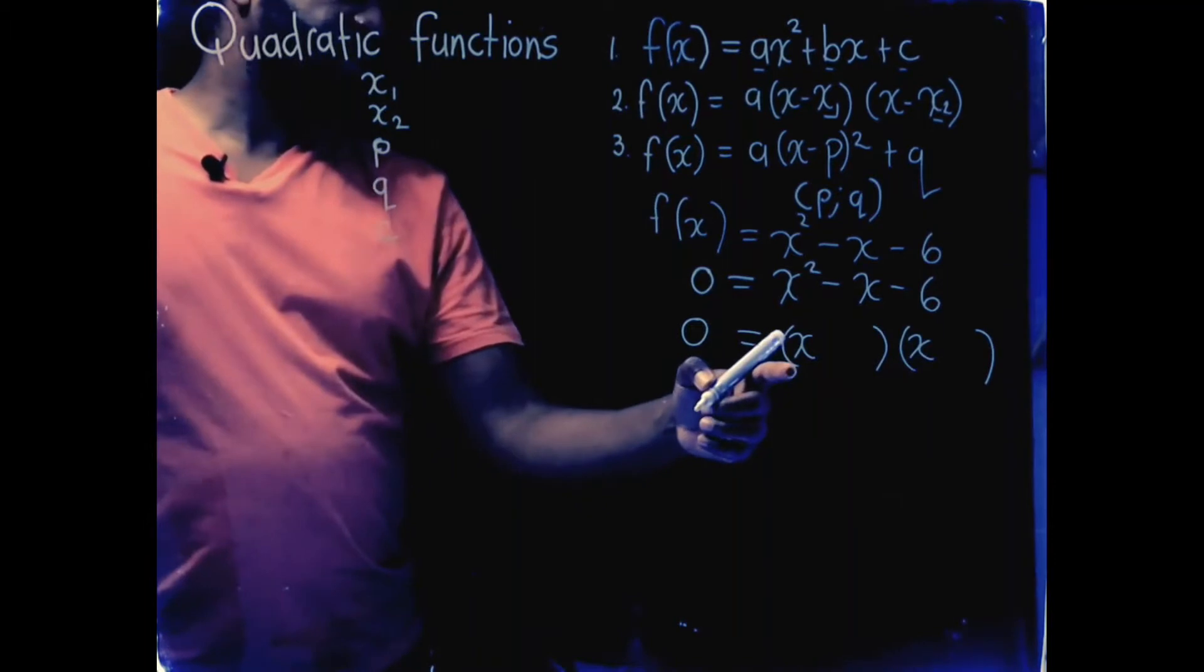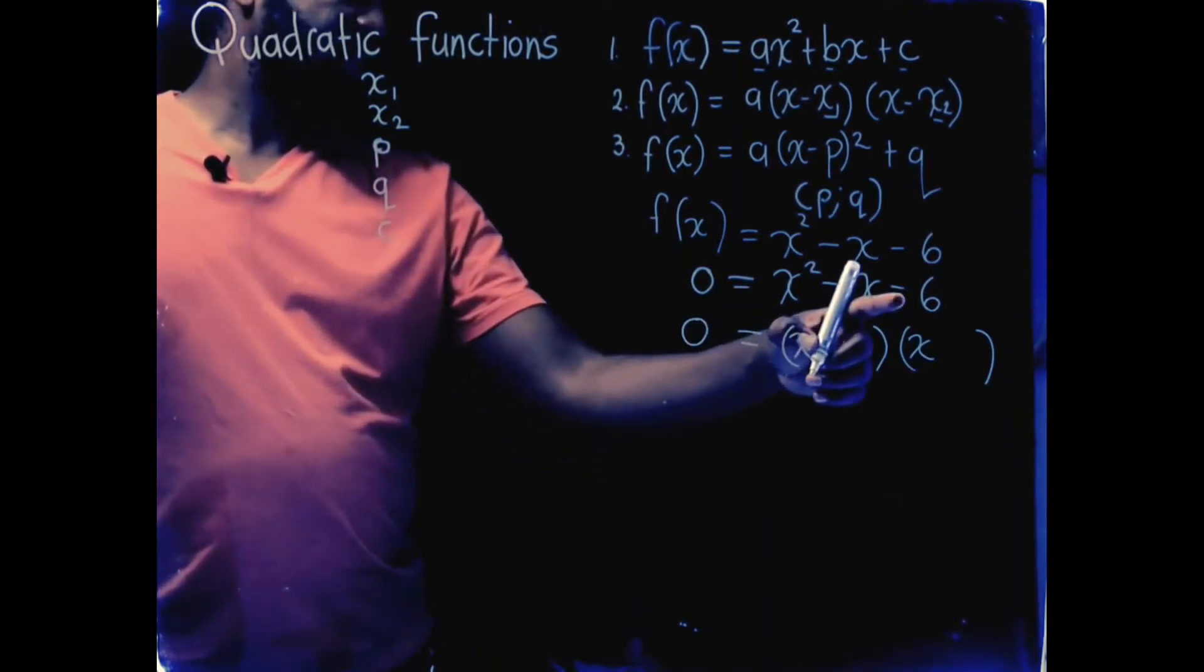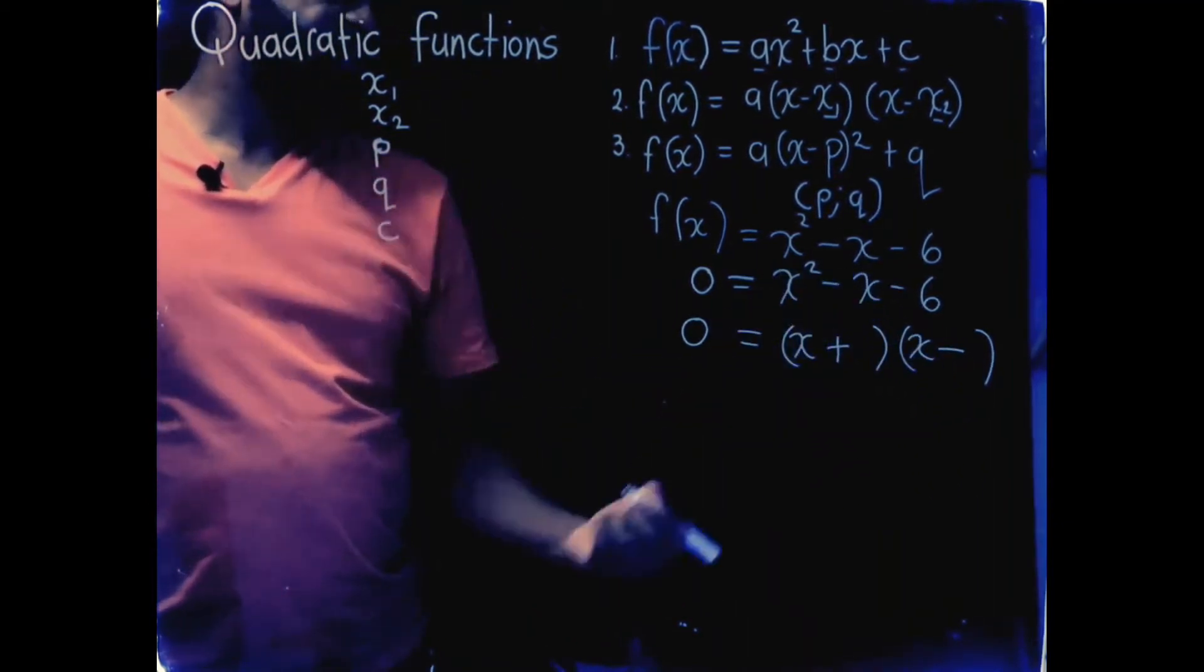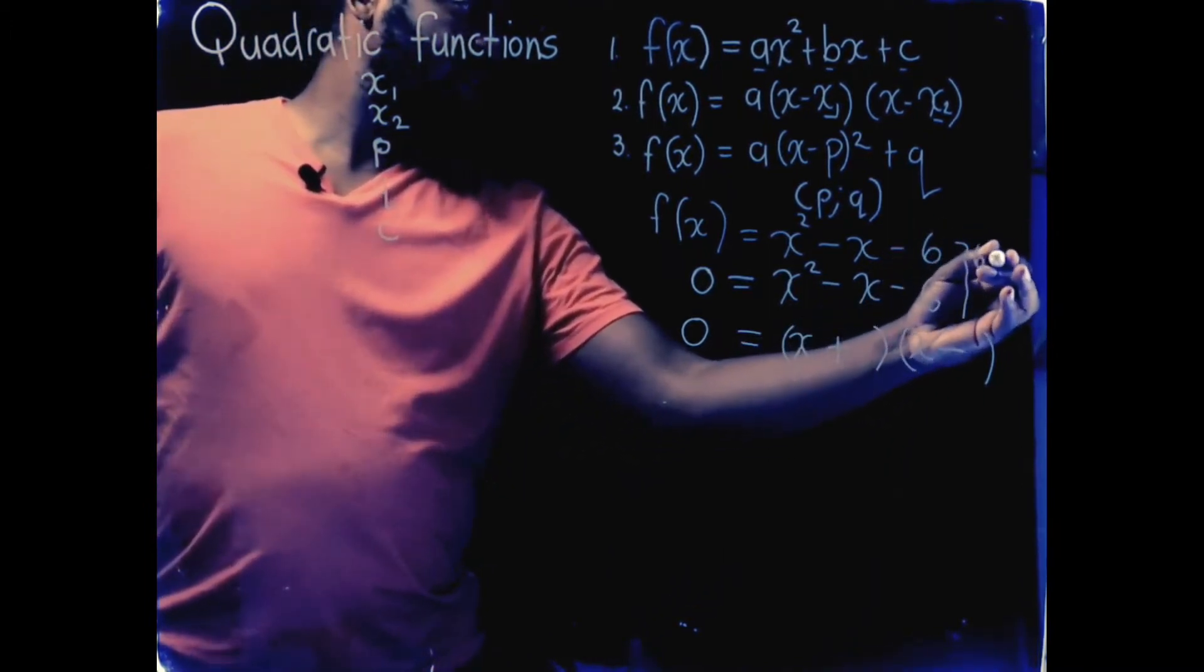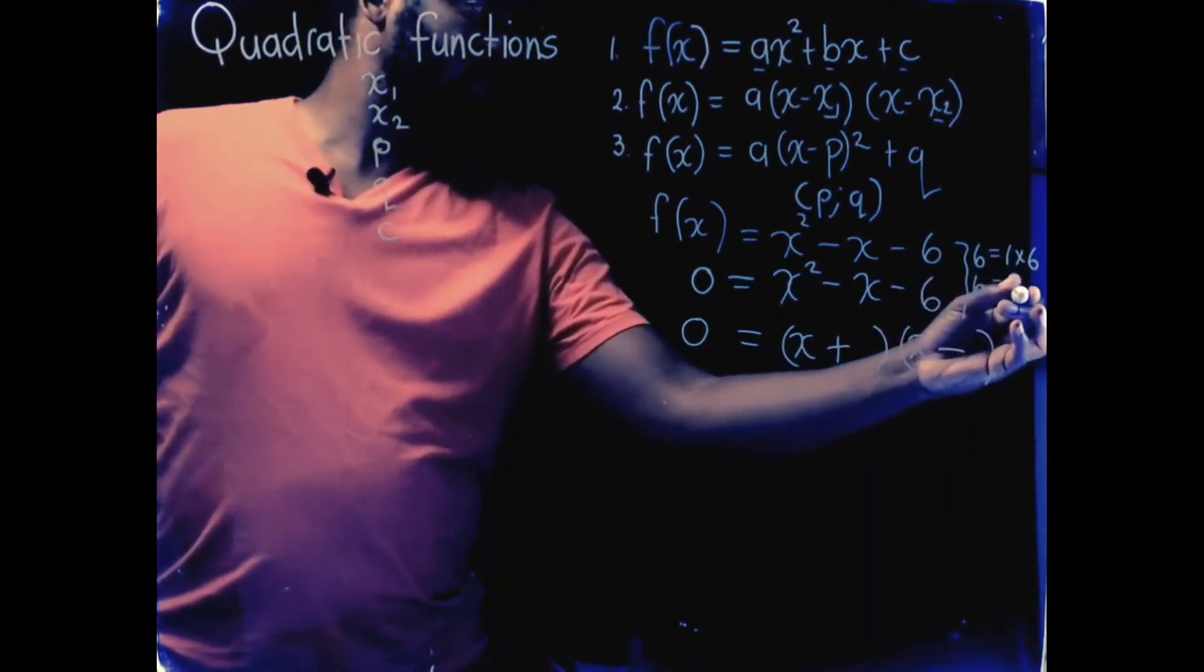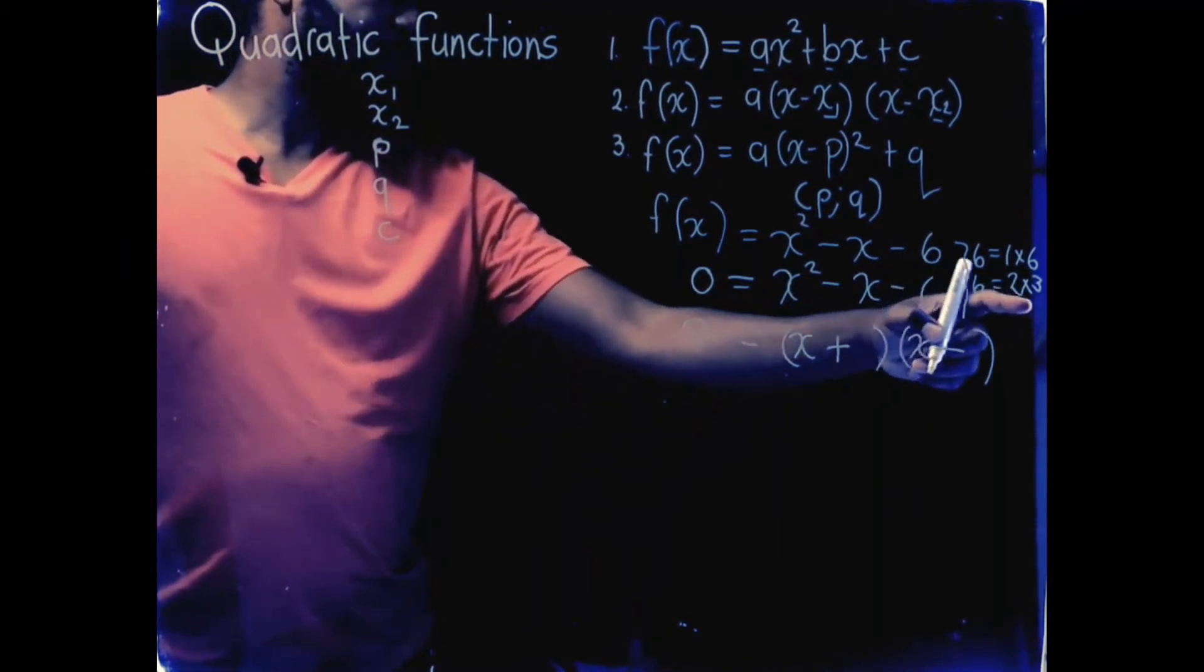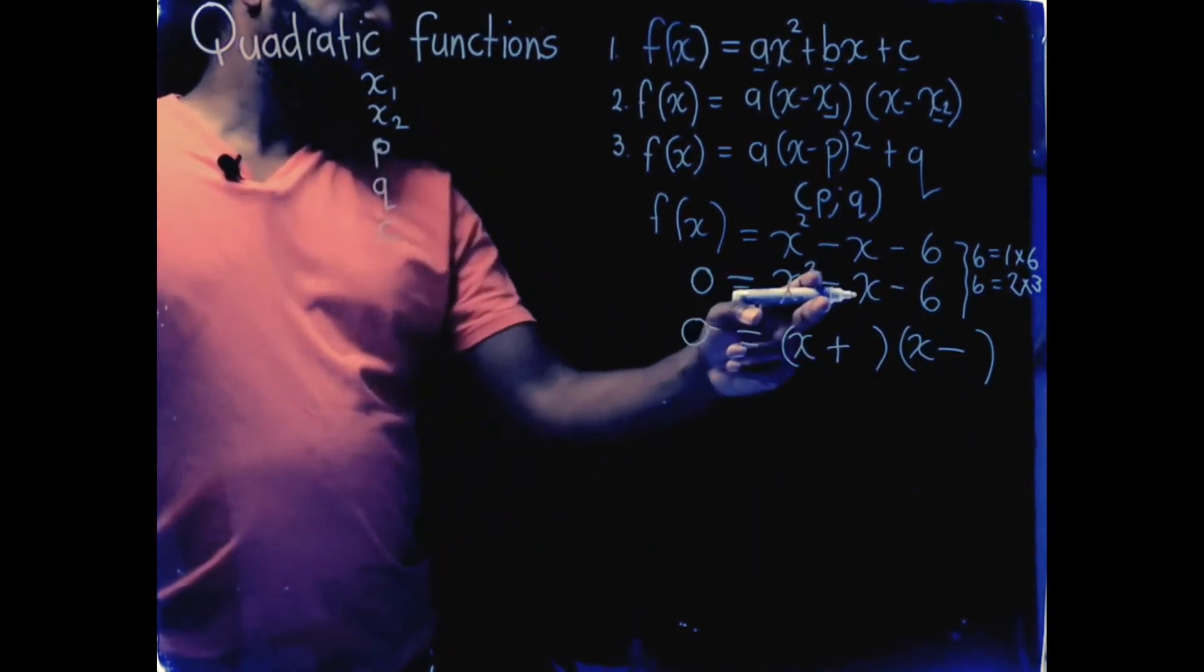x and x are the first terms of the two brackets because x times x is x squared. The last term is a negative, which means I'm multiplying a positive and a negative. Positive times negative will give me a negative. The number there is 6. I need factors of 6 that will give me a difference of 1. These are the factors that work. Because 3 minus 2 is 1, 2 minus 3 is negative 1. But how do I get the negative 1 here?